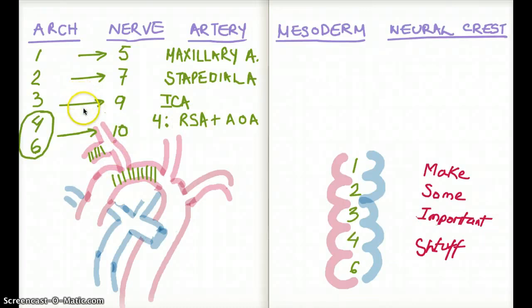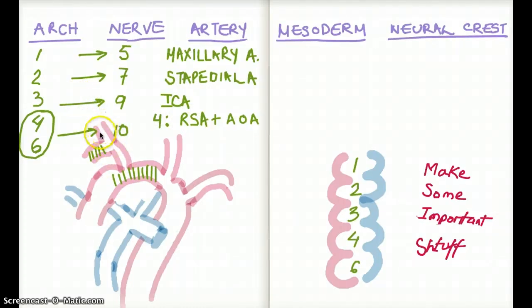Well, common carotid later becomes internal carotid. So the internal carotid is going to arise from brachial arch 3. So the pink shaded area is going to be supplied by brachial arch 3. The green shaded area is going to be supplied by brachial arch 4.